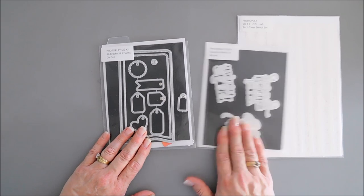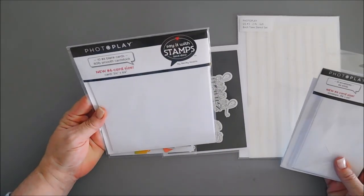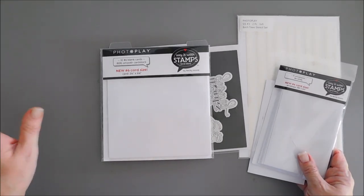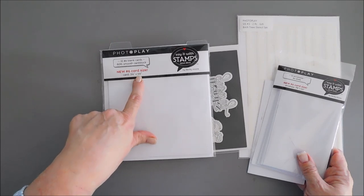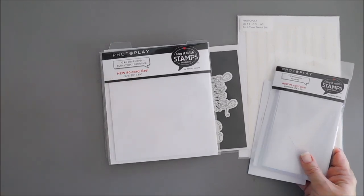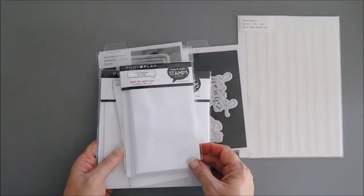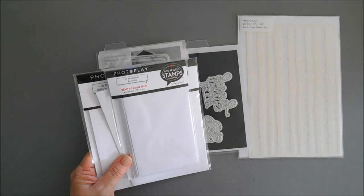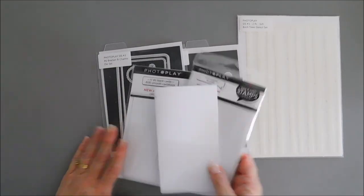I'm going to be using mini slimline cards today for my project. I love that there's 10 in a pack—the price point on these is wonderful. These are actually three and a half inches wide by six and a quarter inches tall, and they coordinate beautifully with the dies. I don't have to figure out what envelope to use because the Say It With Stamps collection has the number six white envelopes too, which makes it pretty easy peasy.